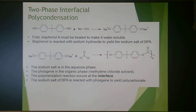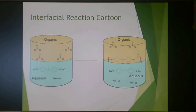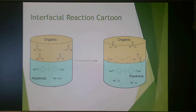To visualize this: in the organic layer you have phosgene in methylene chloride solvent; in the aqueous layer you have the sodium salt of bisphenol A and some sodium hydroxide. These react at the interface to produce polycarbonate, with sodium chloride produced as a byproduct.